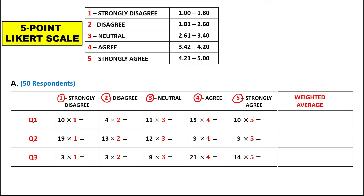To solve for the weighted average: 10 times 1 is 10; 19 times 1 is 19; 3 times 1 is 3. Then 4 times 2 is 8; 13 times 2 is 26; 3 times 2 is 6. Then 11 times 3 is 33; 12 times 3 is 36; 9 times 3 is 27.